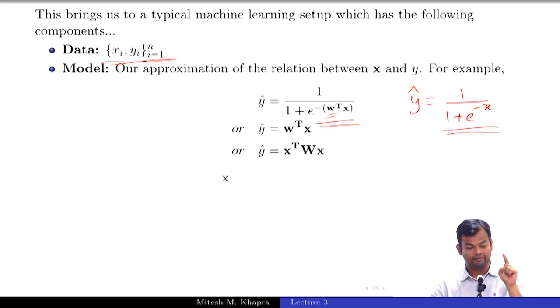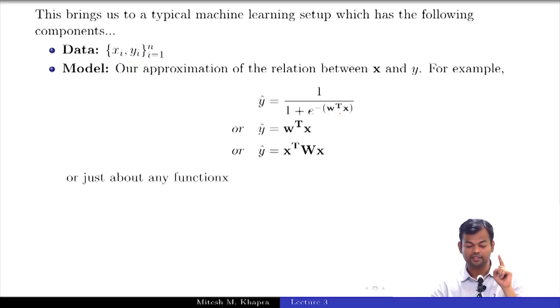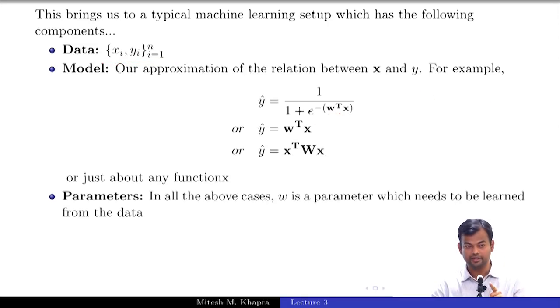So you have the data, you have the model. The model always has some parameters. In all of the above cases, w is a parameter. Either the small w which is a vector or the capital W which is a matrix. Notice that this is a matrix. This is 1 cross n, n cross n and n cross 1. Now how do we learn these parameters? That is the question that we need to answer. How do we learn these parameters? We are convinced about two things: we never know the true function, so we come up with an approximate function, and we have to insert some parameters in that function. So far good. Now I have to be able to learn these parameters.